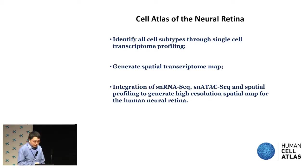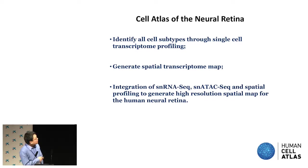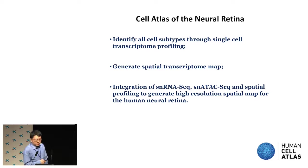There are three parts to the goal of the CZI-funded iNetwork for our project. We're interested in identifying all cell subtypes through single-cell transcription profiling — we estimate there are about 80 to 100 different cell types in the neural retina based on previous studies. We also want to generate a spatial transcriptome because the neurons are in a mosaic arrangement, mixed together, so it's important to know their spatial relationship. Finally, we want to integrate RNA sequencing, ATAC sequencing, and spatial data to get a high-resolution spatial map for the community.